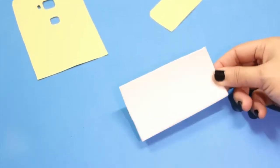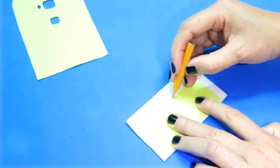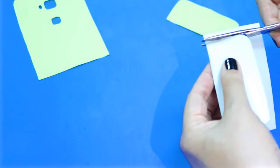For the next step, you need some craft foam. I'm gonna use this white foam piece to trace the template bottom on it, then cut it out.